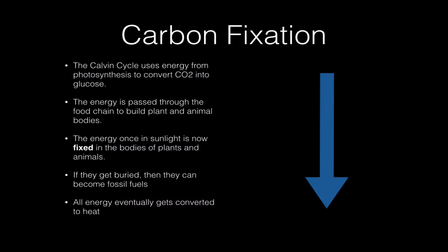The Calvin cycle uses energy from the light reactions part of photosynthesis to convert six carbon dioxide into glucose. That means the energy now in the glucose can be passed through food chains to build the bodies of plants and animals.